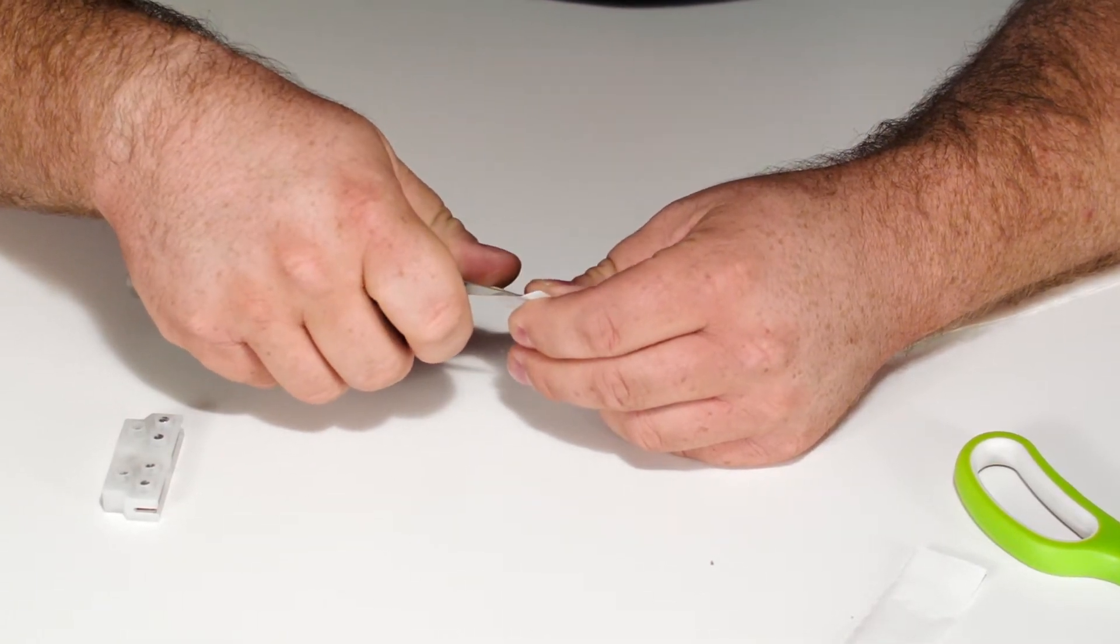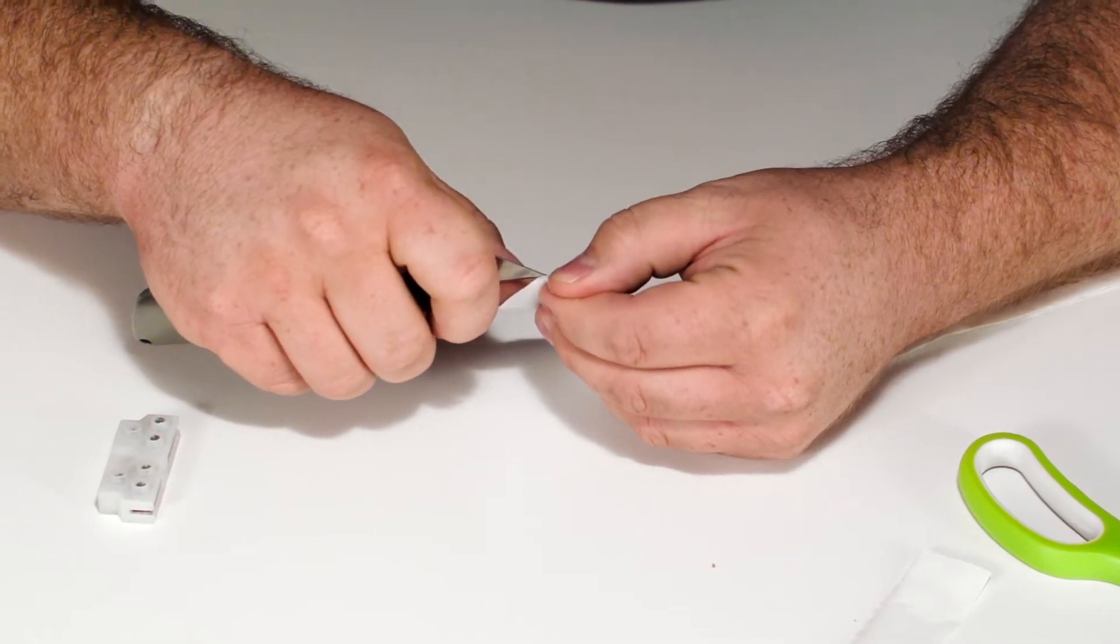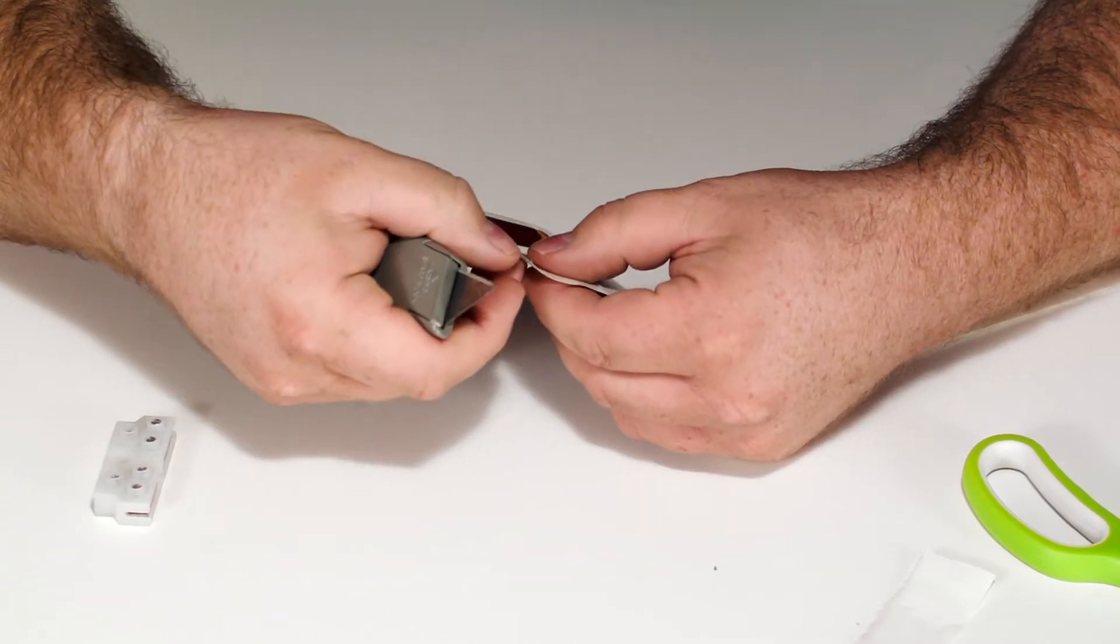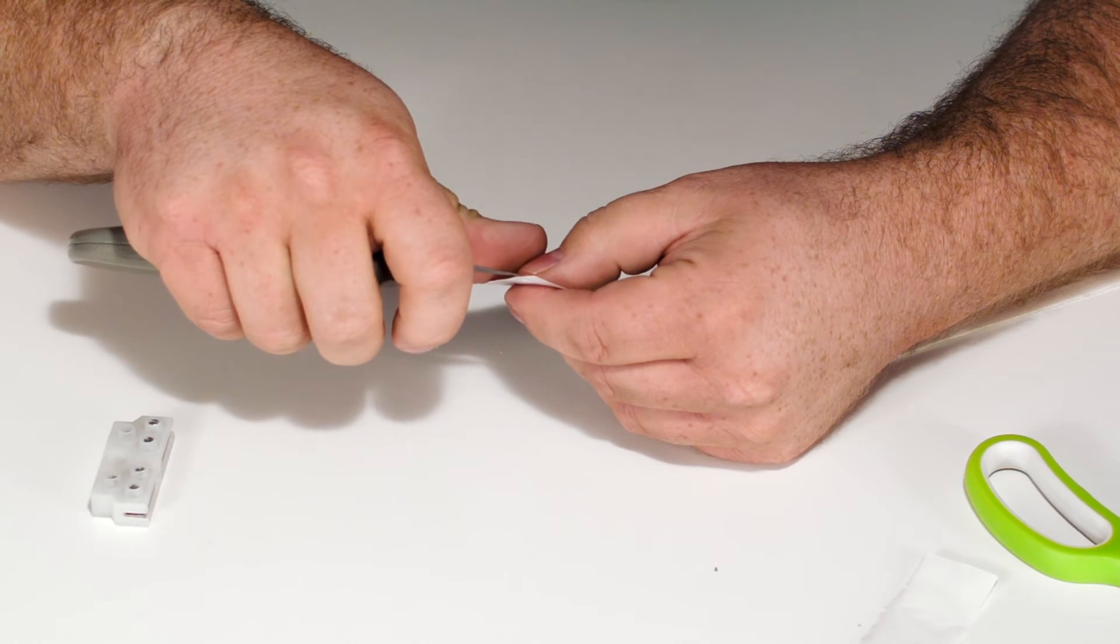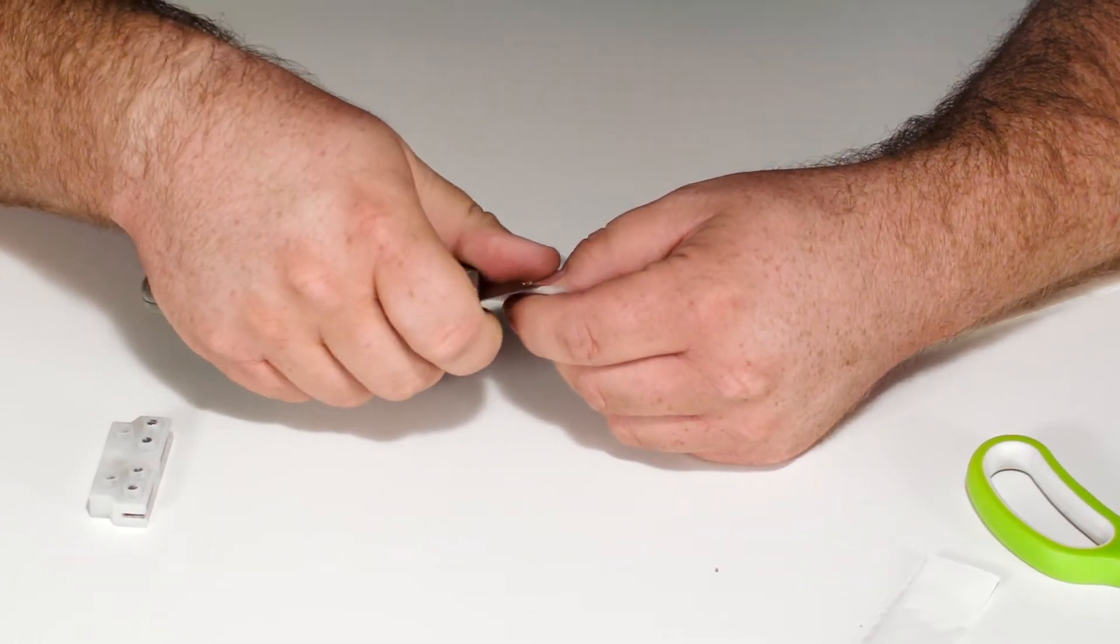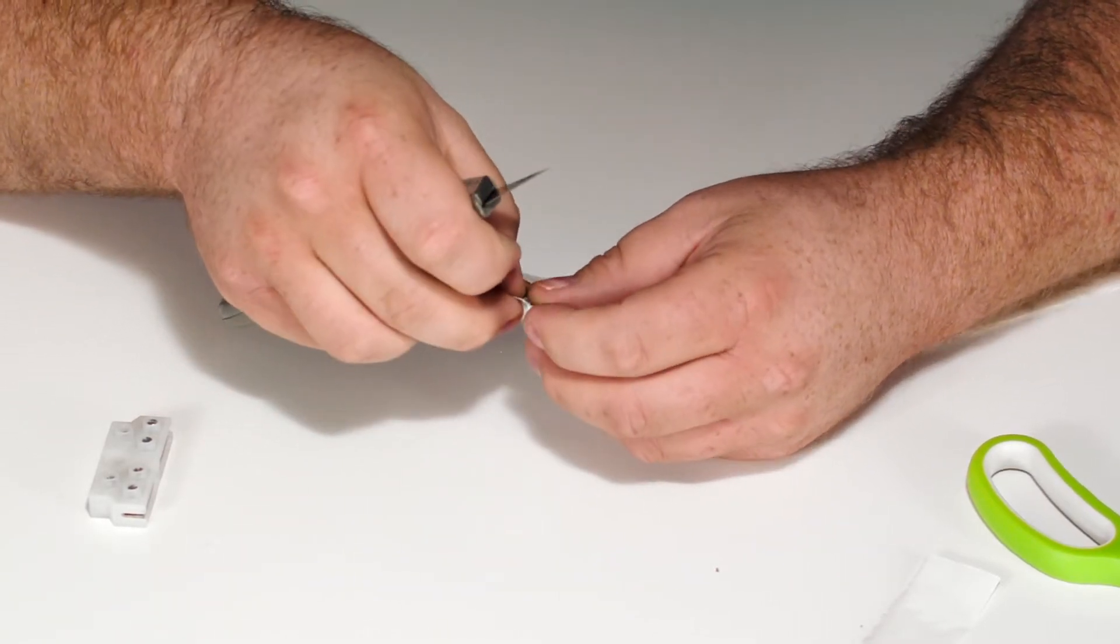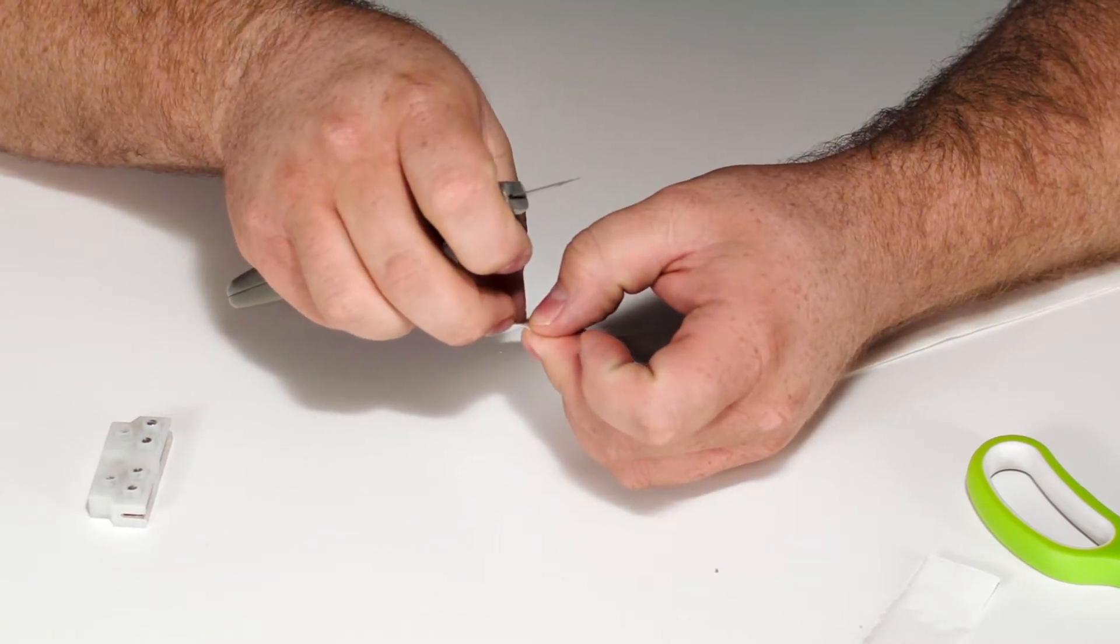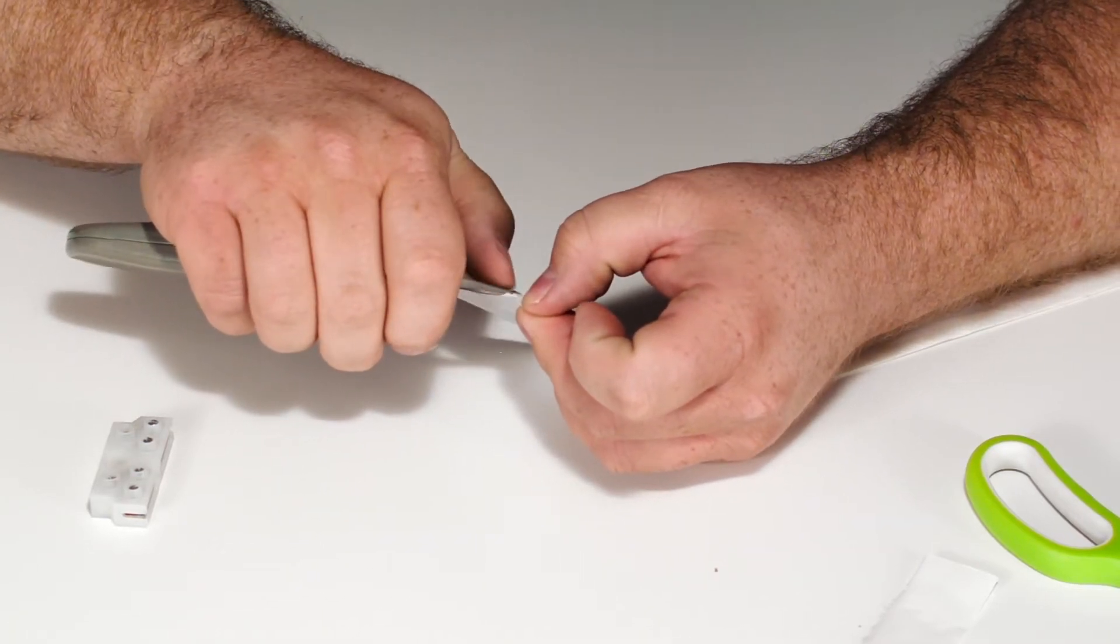You can kind of see the two layers pull apart, and then you can get enough that you can grab it with your hand. This is I think the trickiest part, just to get it started. If you need to, you can kind of bend up the end just to get started and then trim that bit off later.